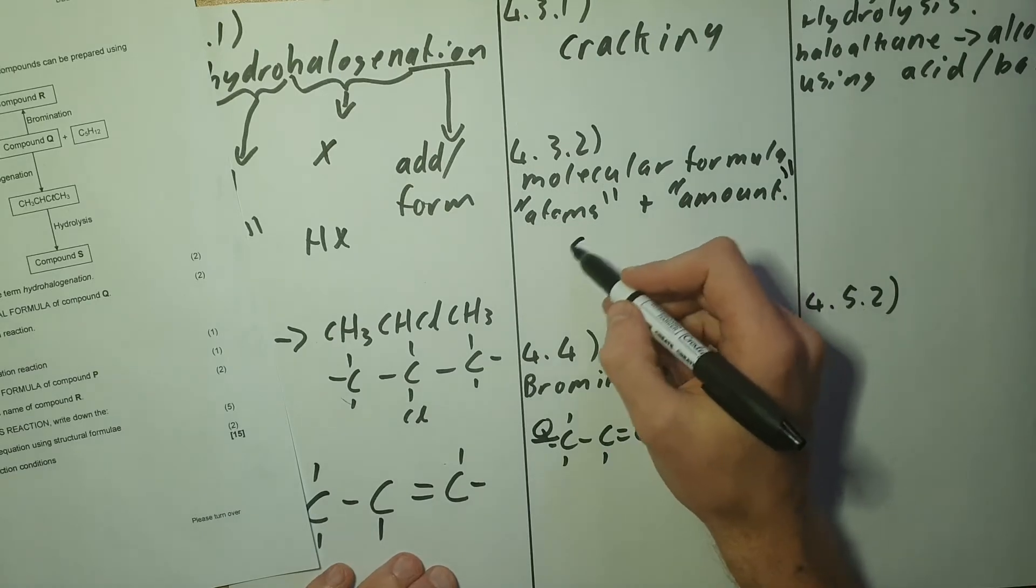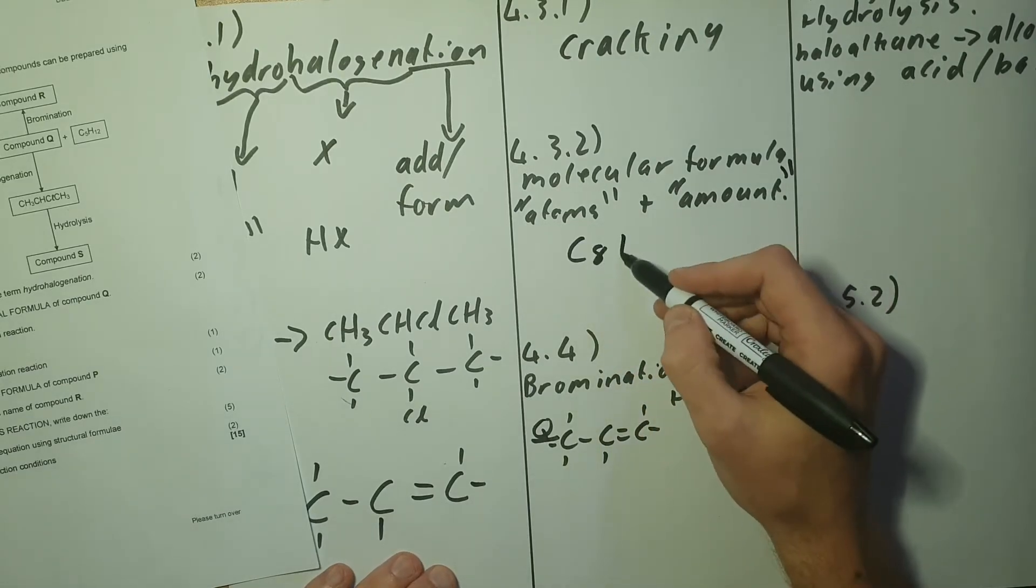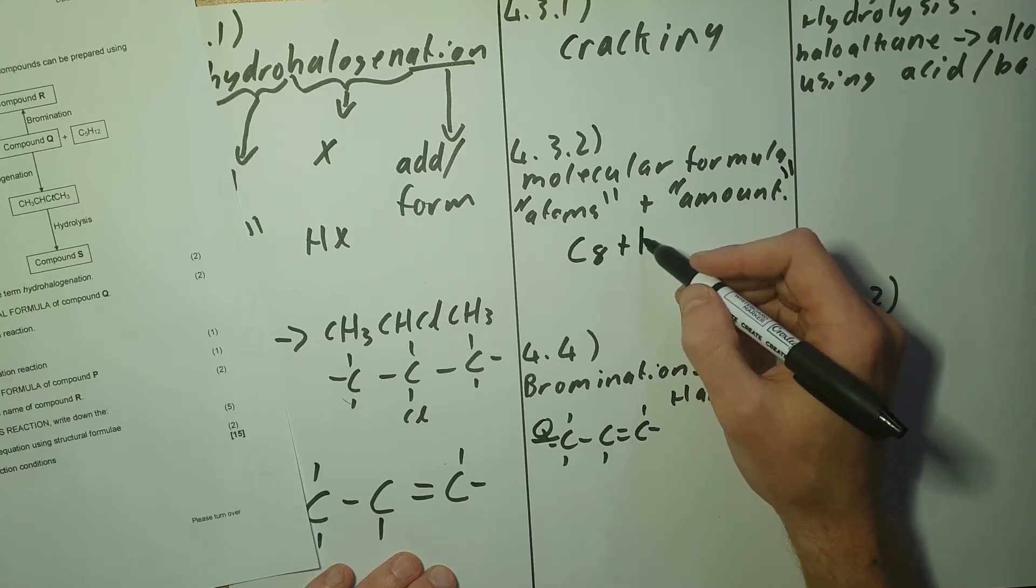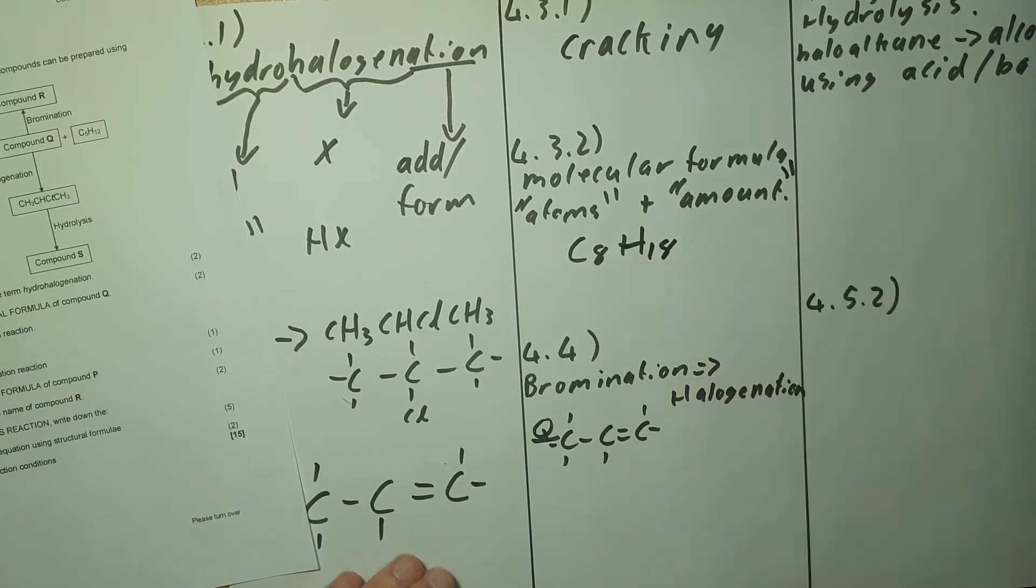So just adding everything together we're going to get eight carbons, so six plus 12 is going to give you 18 hydrogens.